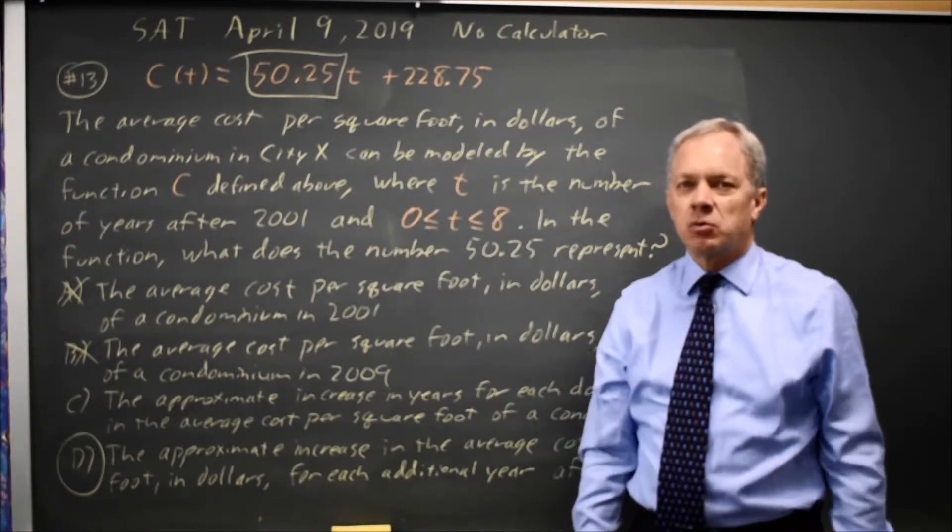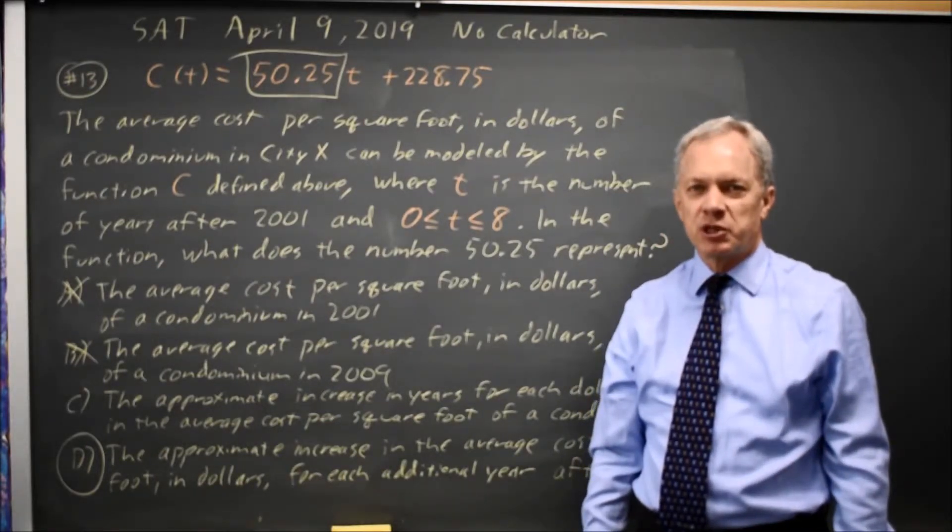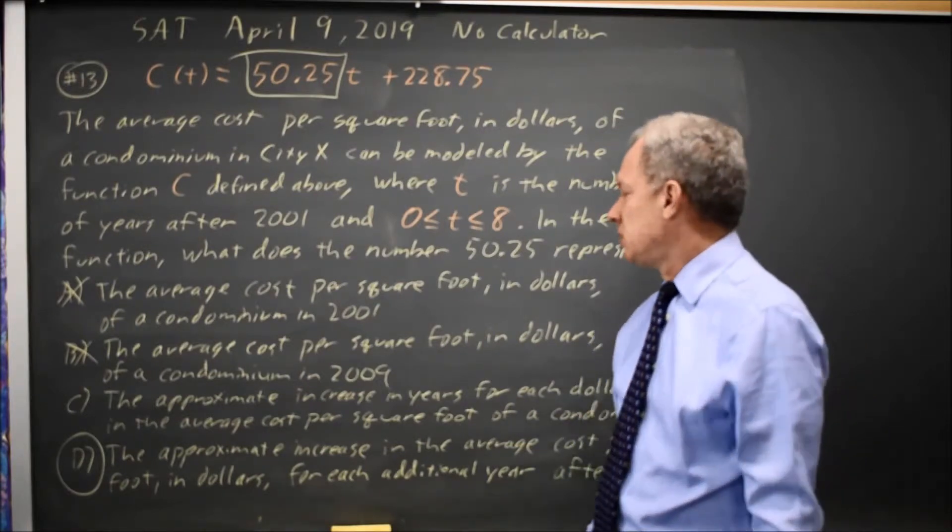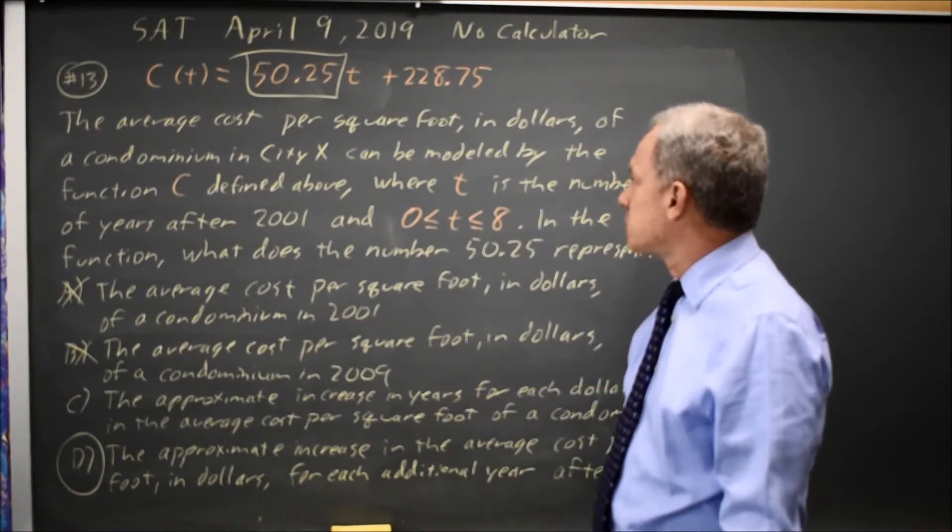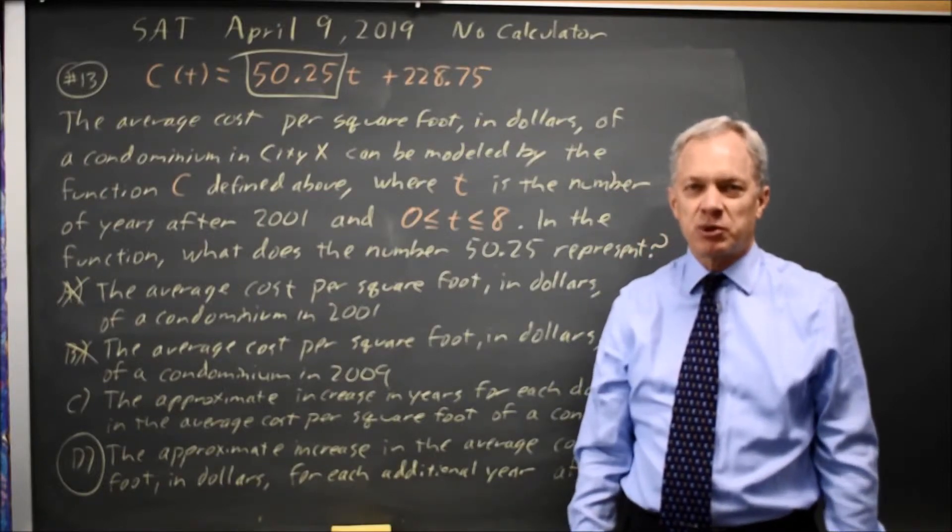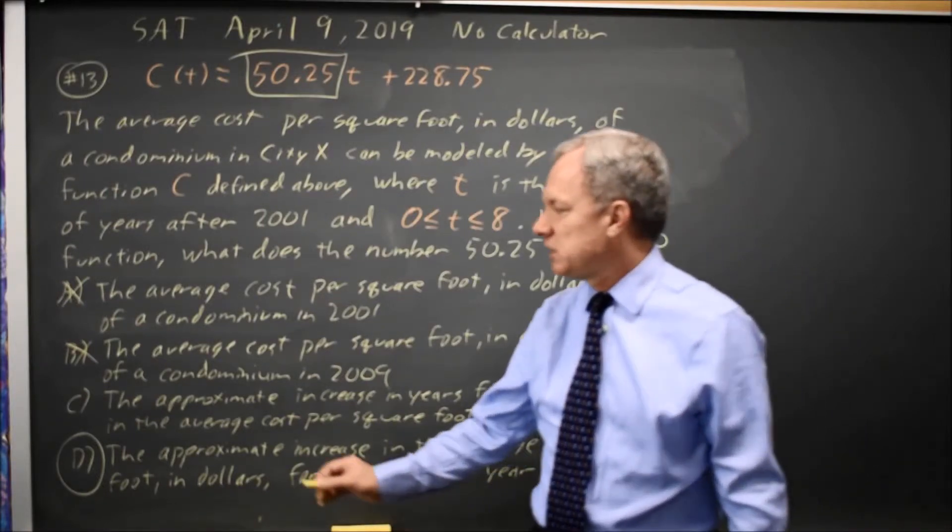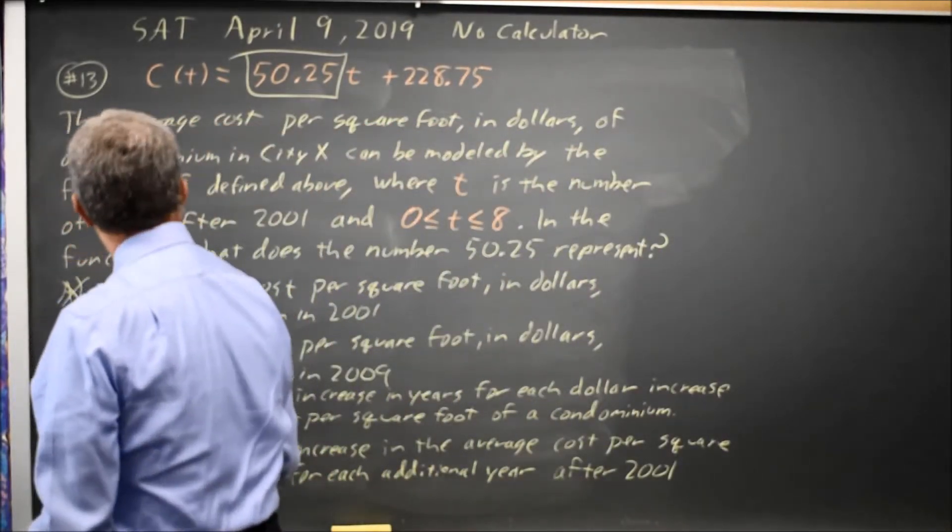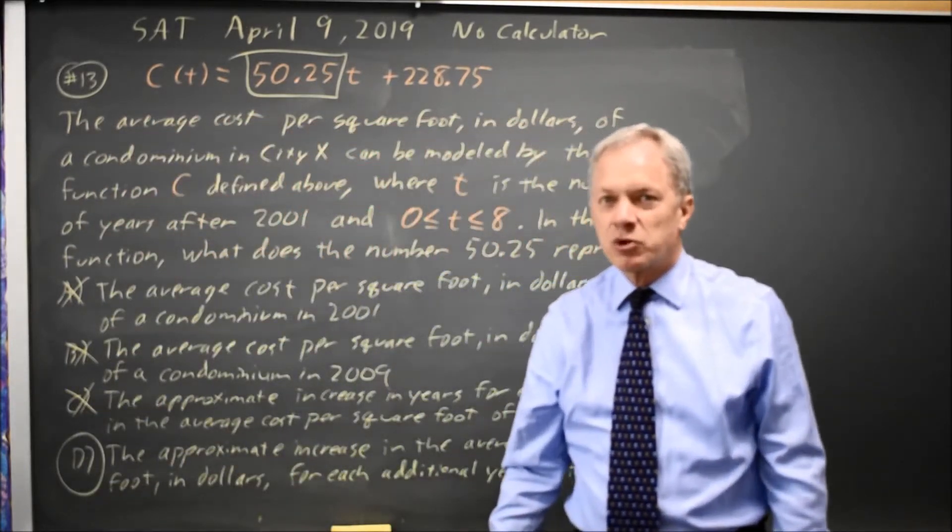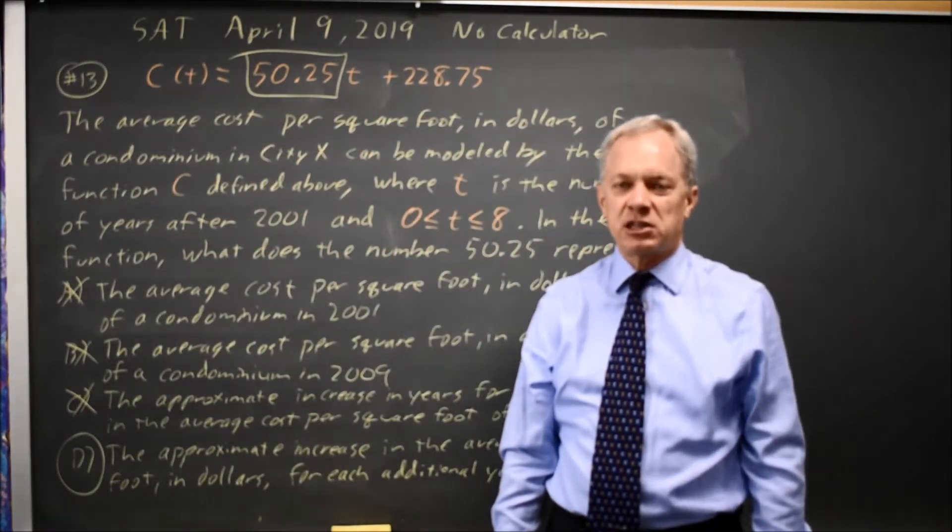And that probably doesn't make sense to those who are familiar with costs. You would not expect it to take 50 years for the cost per square foot of a condo to go up by one dollar. So choice C is not reasonable in terms of the real world in addition to not matching the actual equation.